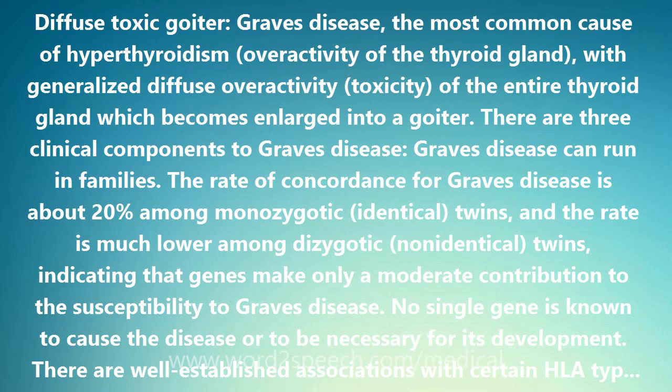There are three clinical components to Graves' disease. Graves' disease can run in families. The rate of concordance for Graves' disease is about 20% among monozygotic (identical) twins, and the rate is much lower among dizygotic (non-identical) twins, indicating that genes make only a moderate contribution to susceptibility. No single gene is known to cause the disease or to be necessary for its development. There are well-established associations with certain HLA types, and linkage analysis has identified gene loci on chromosomes 1q31, 20q11.2, and Xq21 that are associated with susceptibility to Graves' disease.